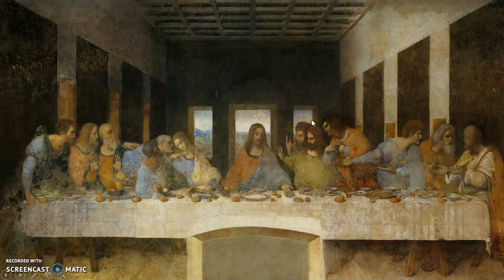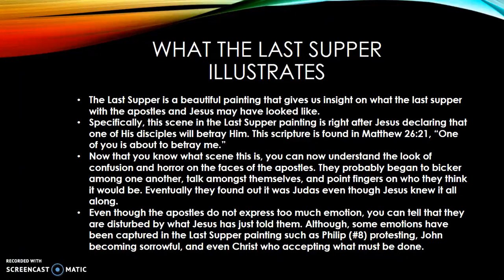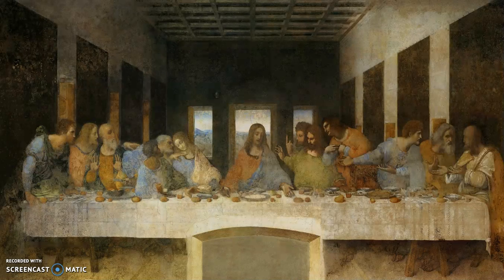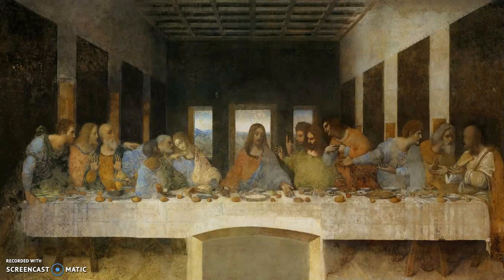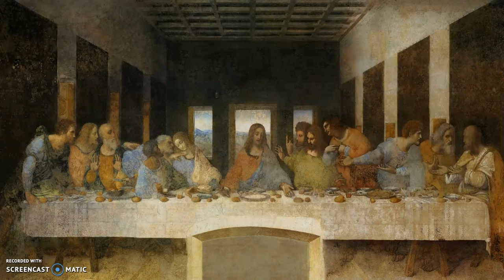Very many details in this painting are symbolic. The Last Supper is a beautiful painting that gives us insight on what the last supper with the apostles and Jesus may have looked like. Specifically, this scene is right after Jesus declared that one of his disciples will betray him. This scripture is found in Matthew 26:21: 'One of you is about to betray me.' Now that you know what this scene is, you can understand the look of confusion and horror on the faces of the apostles. They probably began to bicker among one another, talk amongst themselves, and point fingers at who they think it would be. Eventually they found out it was Judas, even though Jesus knew it all along. Even though the apostles do not express too much emotion, you can tell that they are disturbed by what Jesus has told them.